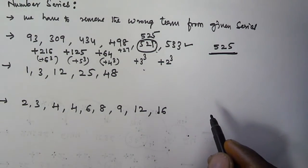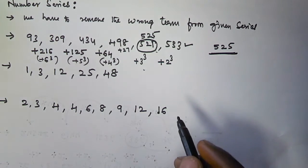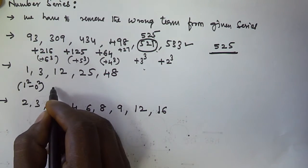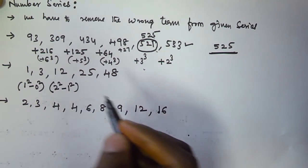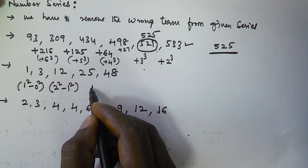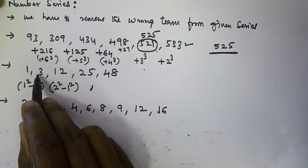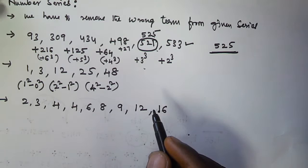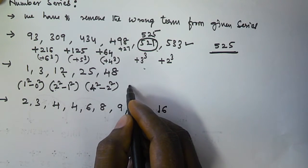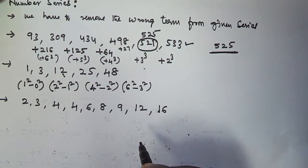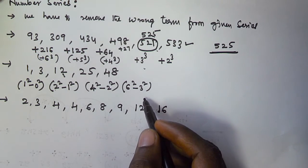For the second series 1, 3, 12, 25, 48, the pattern can be written as differences of squares. The first term is 1² minus 0² equals 1. The next is 2² minus 1² equals 3. Then 4² minus 2² equals 16 minus 4 equals 12. Then 6² minus 3² equals 36 minus 9.